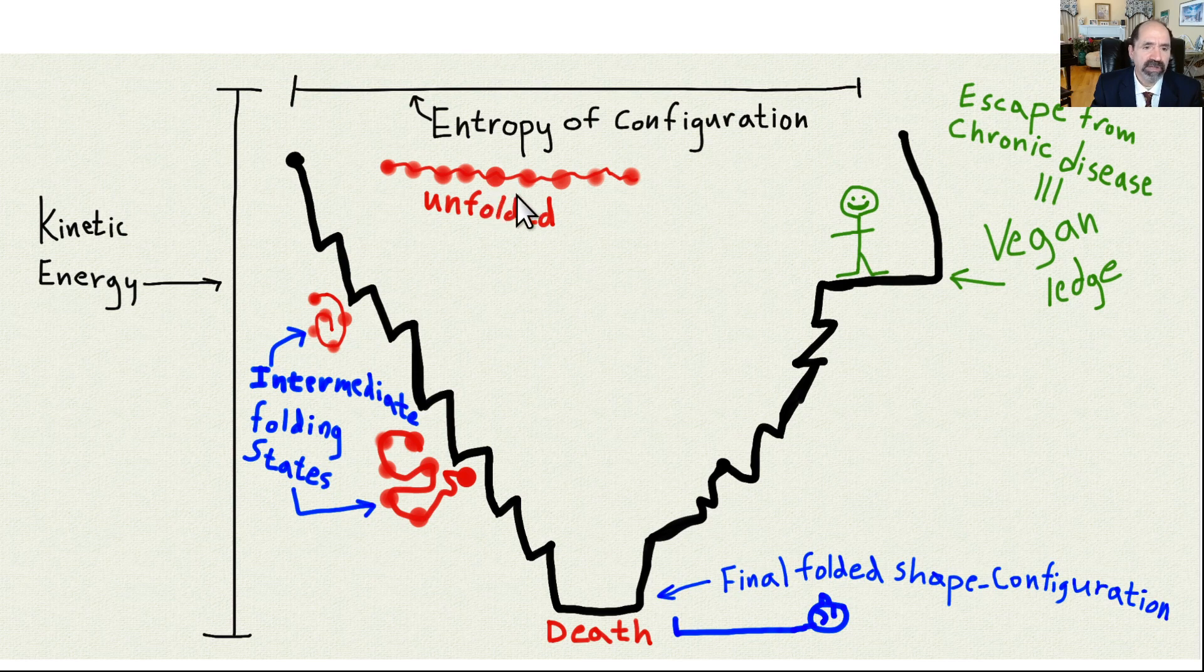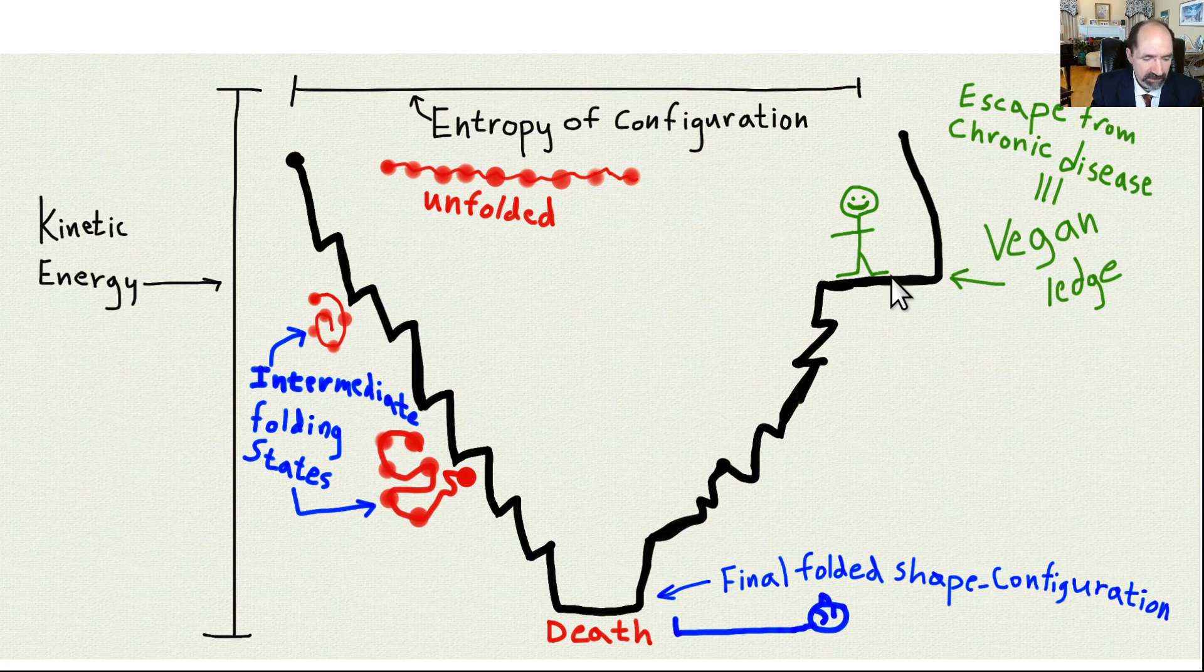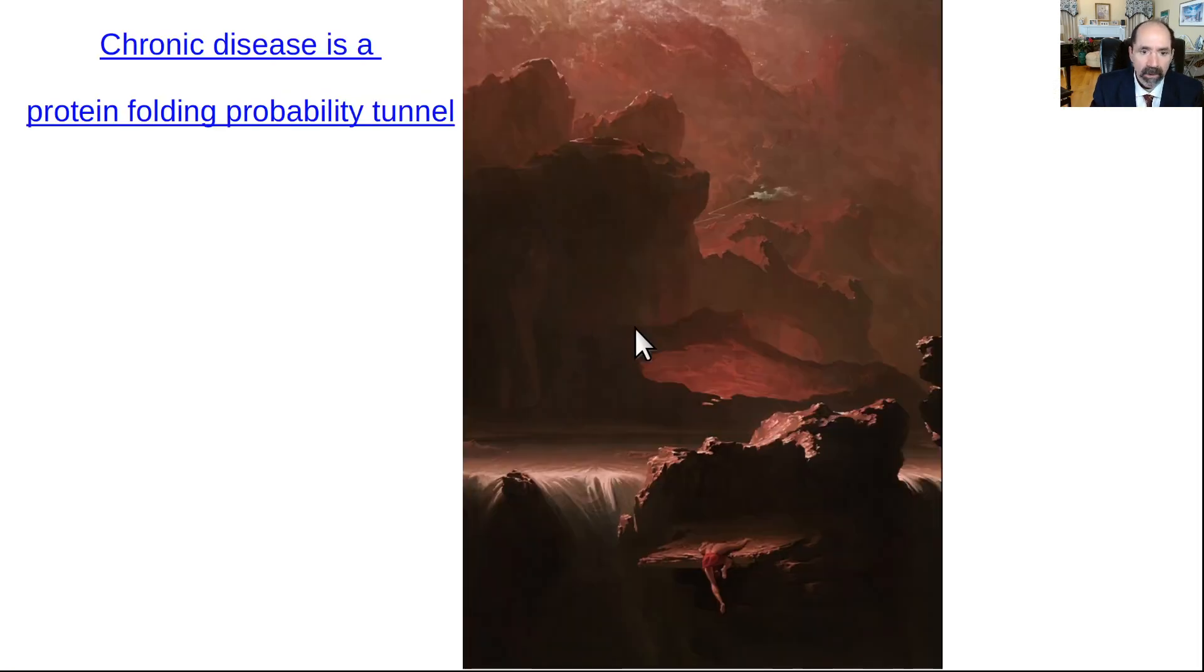The protein starts out unfolded, string of beads, starts to fold through these intermediate phases, and ends up in its final phase. For a human, the final phase is death. What we want to do is find a spot where we can just hang out for a couple of decades and be healthy and be free from chronic disease.